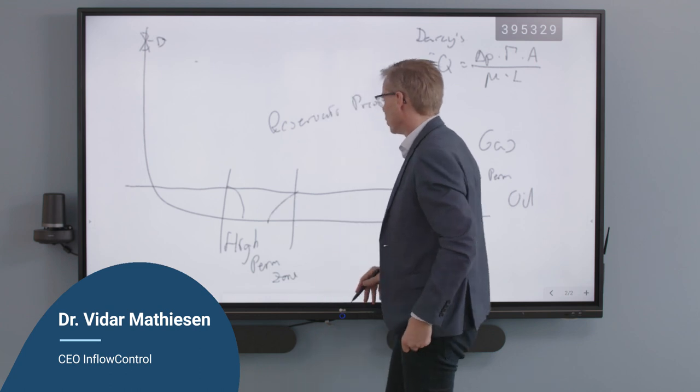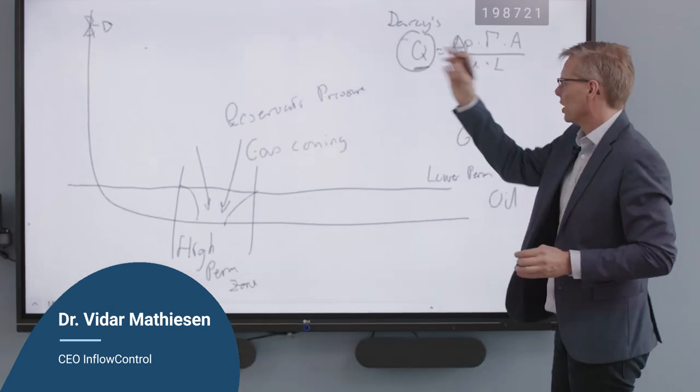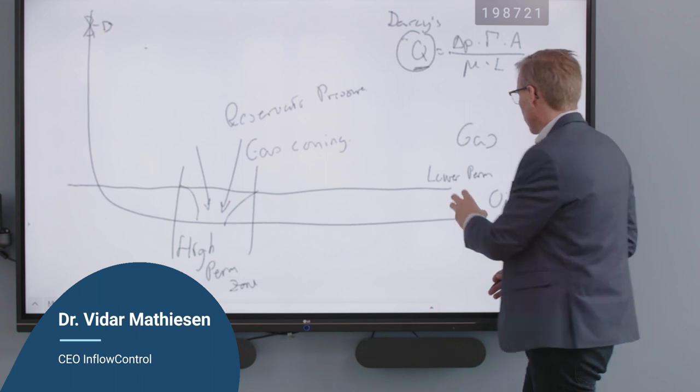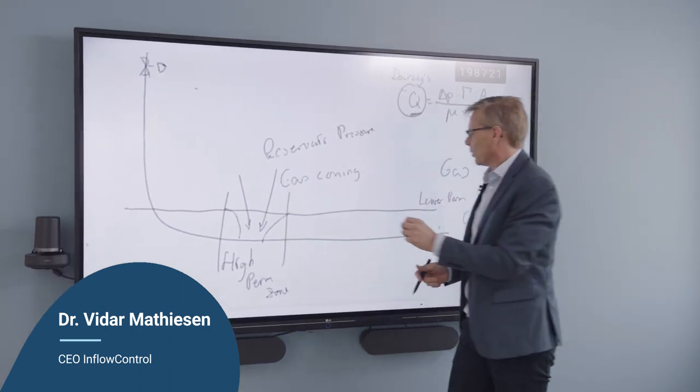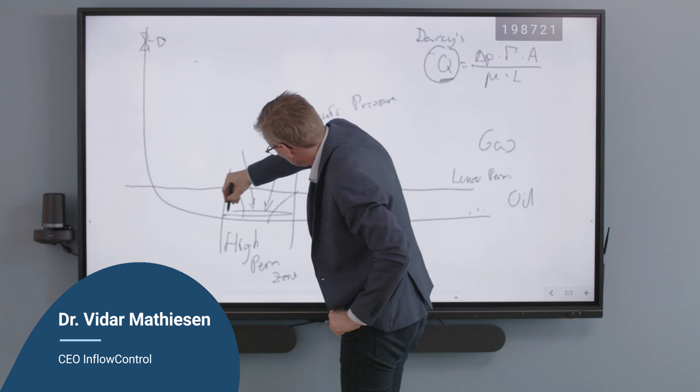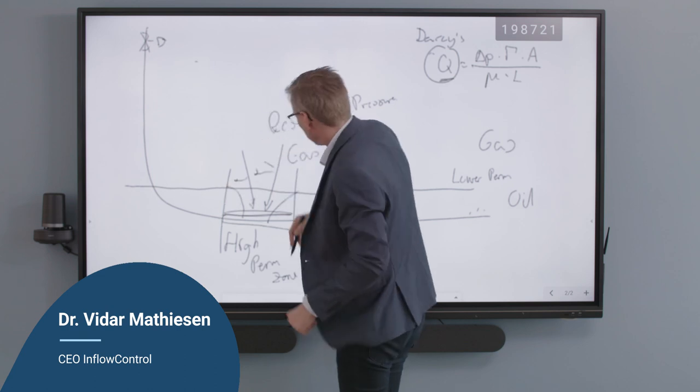When you have a breakthrough of gas here, what can you do? You can choke the well, or you need to have something that can block off this zone. Where you could just say, I don't want to produce here, because here I have just gas.